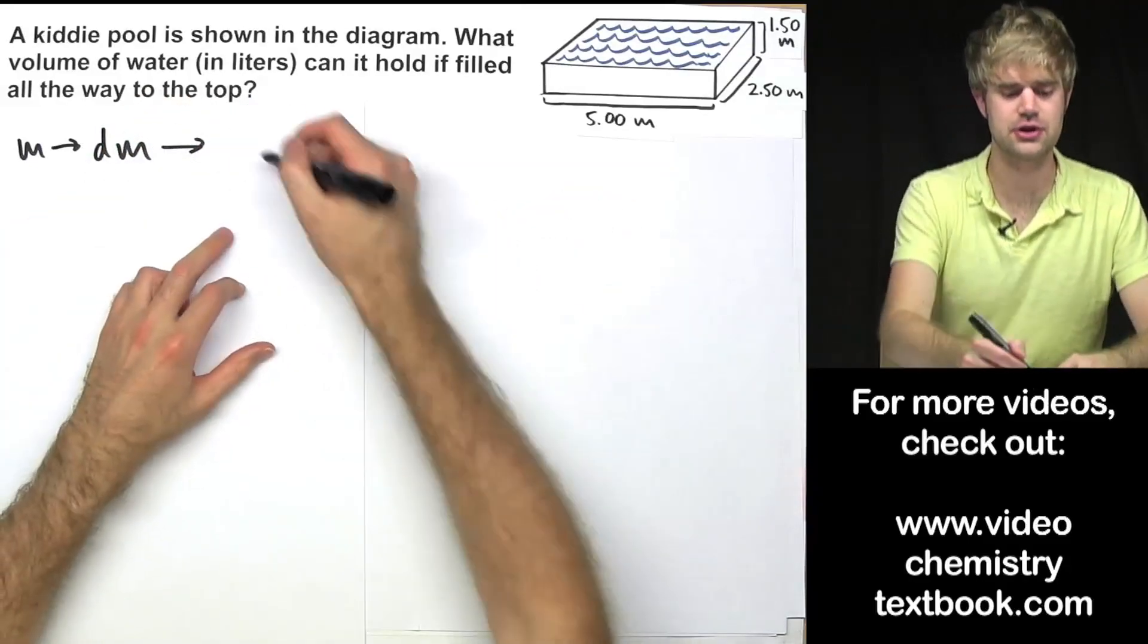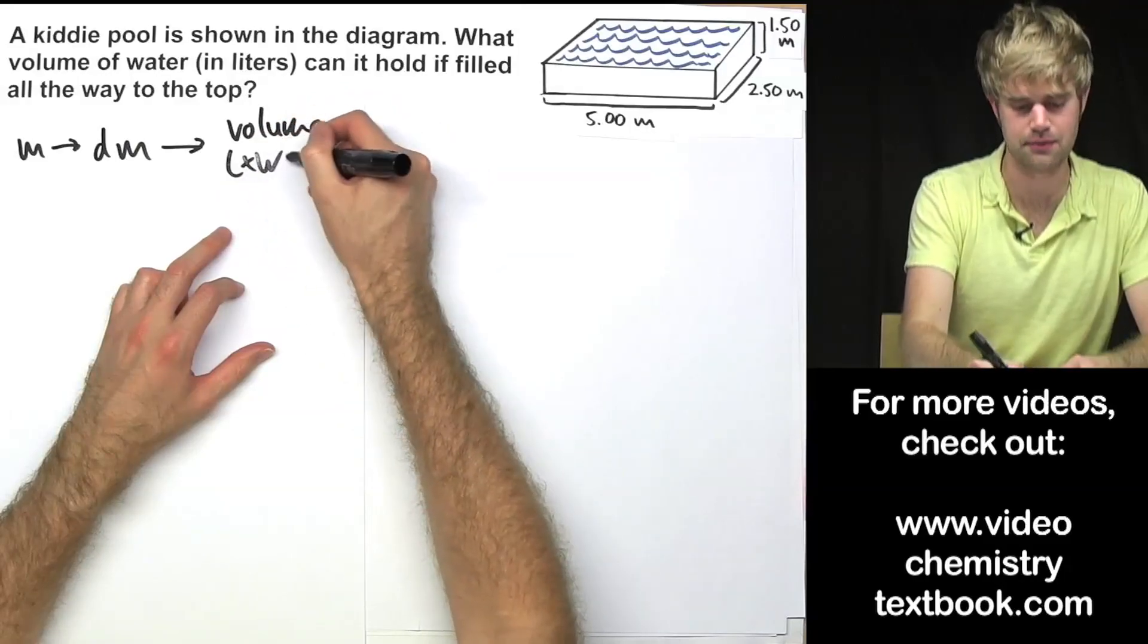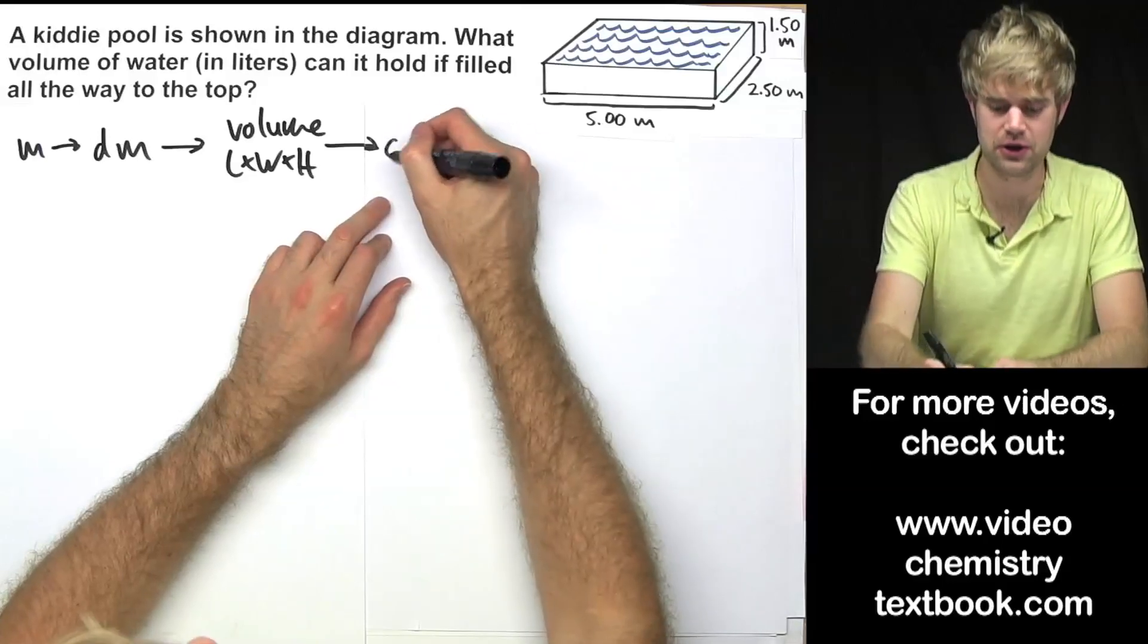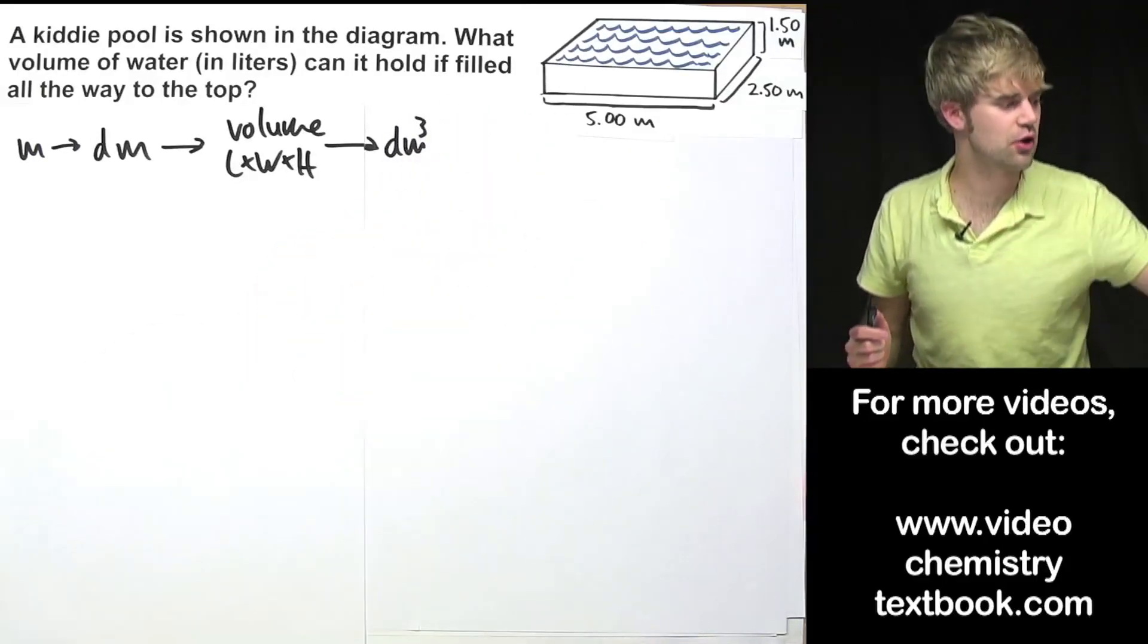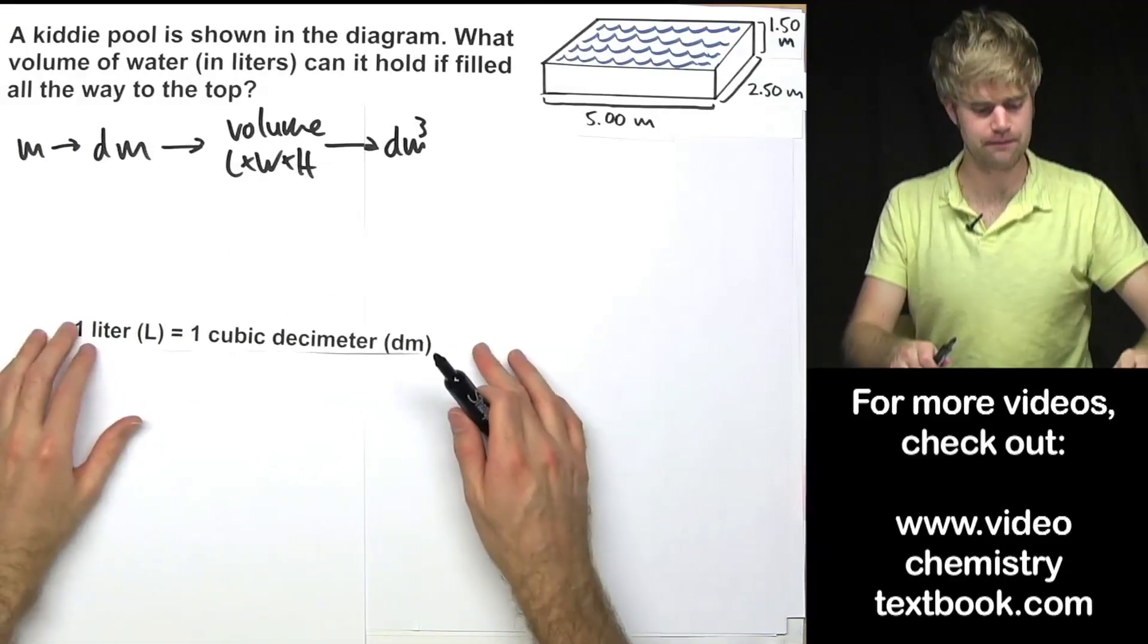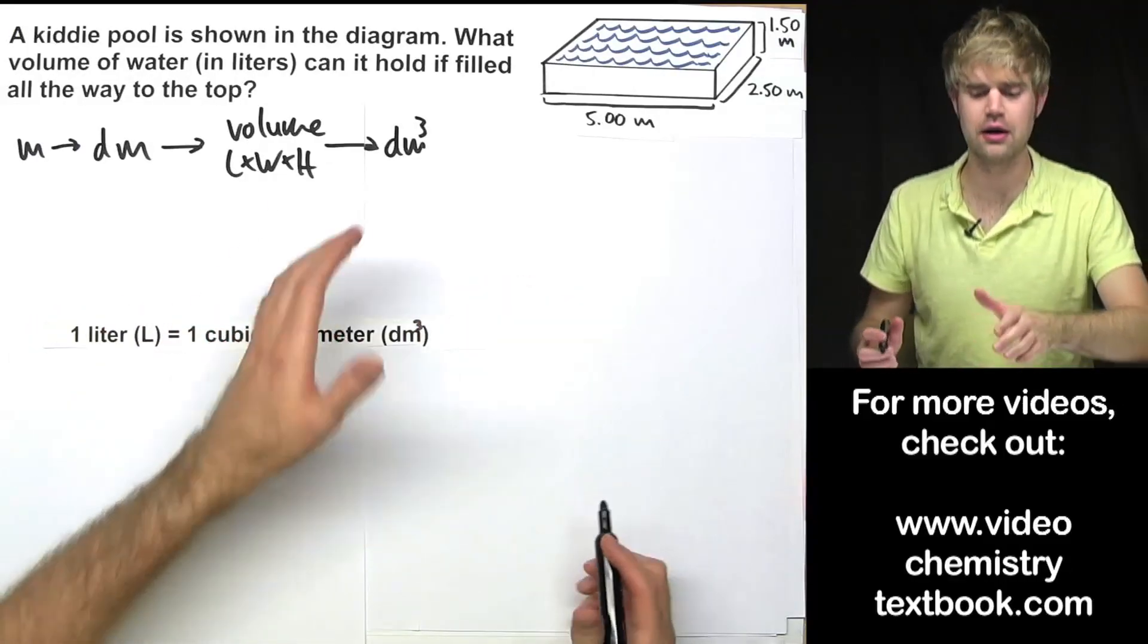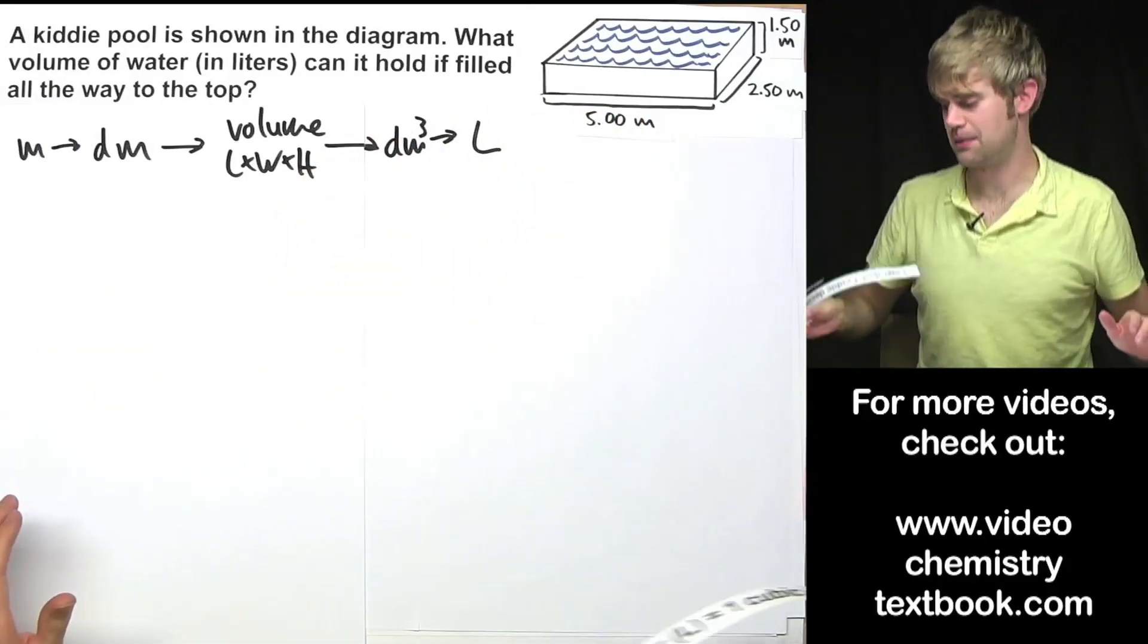So I'm going to start with my lengths here in meters and I'm then going to convert them to decimeters. After I have them in decimeters, I'm going to calculate the volume of the pool by doing length times width times height. And from that, it's going to give me units of cubic decimeters. As we said earlier, one liter is the same as one cubic decimeter. This should be cubic here. And so I'm going to be able to convert from that into liters. Let's do this step by step.